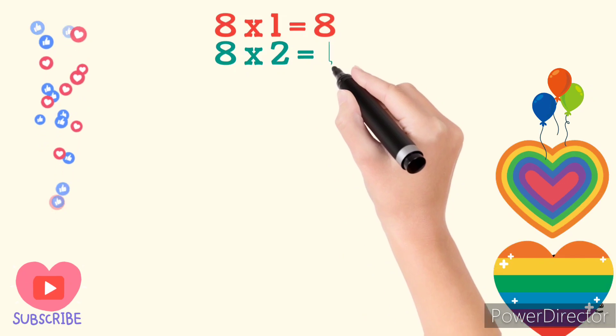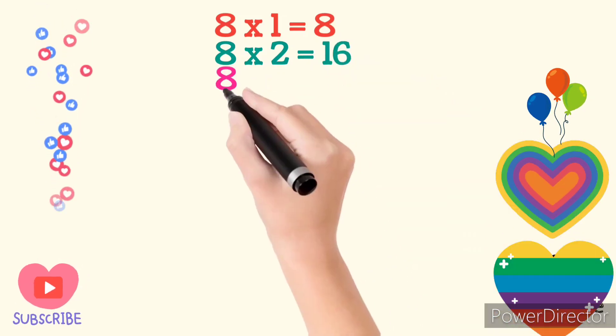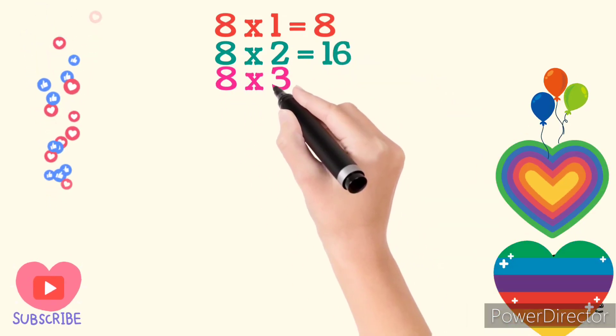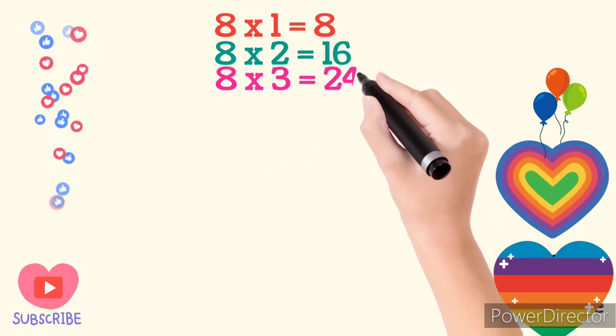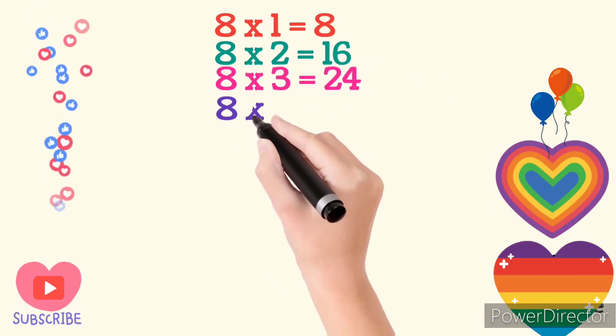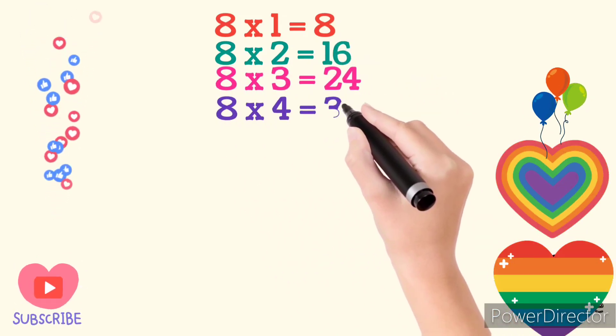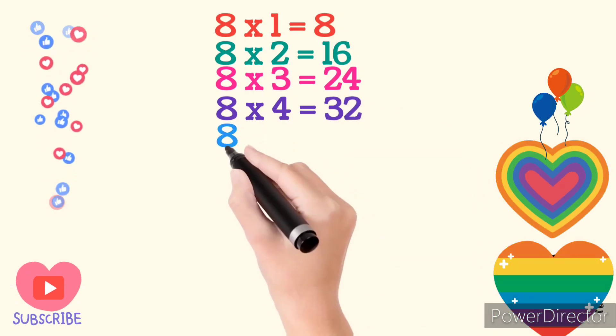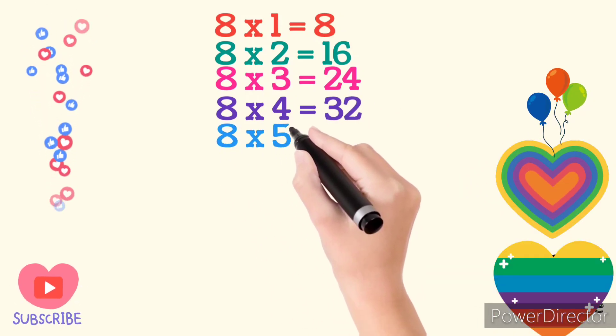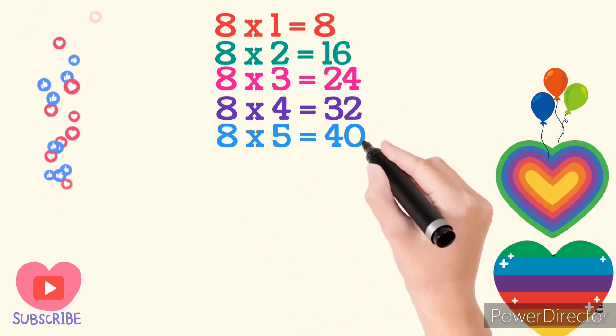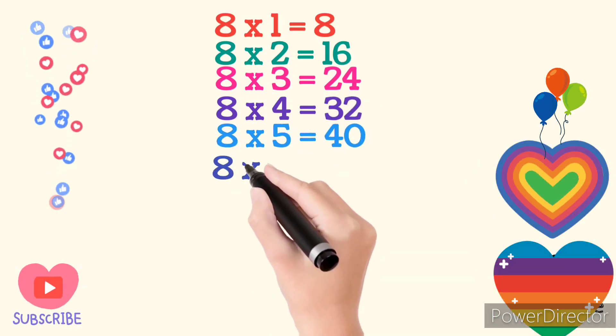8 times 1 are 8. 8 times 2 are 16. 8 times 3 are 24. 8 times 4 are 32.